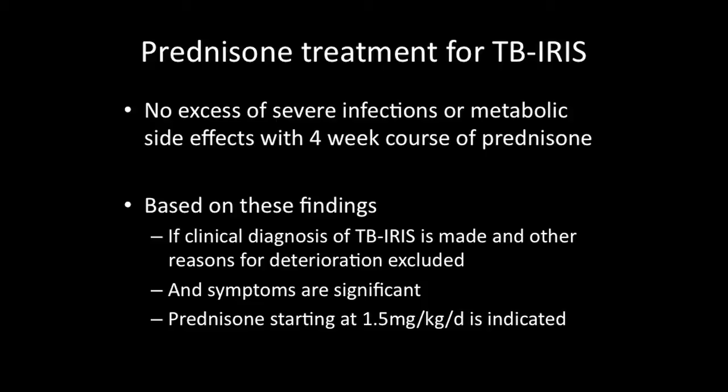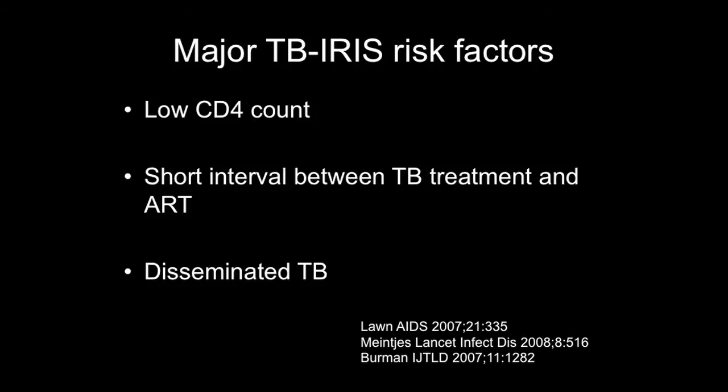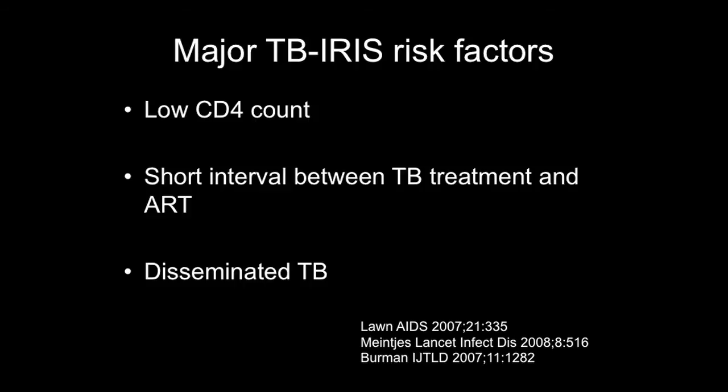In summary, for prednisone treatment of TB IRIS, there was no excess of severe infections or metabolic side effects with a four-week course. Based on these findings, if a patient has a clinical diagnosis of TB IRIS, other reasons for deterioration are excluded, and symptoms are significant, it would justify using prednisone. The three most prominent risk factors for TB IRIS are low CD4 count, a short interval between TB treatment and starting antiretrovirals, and having disseminated TB at diagnosis.